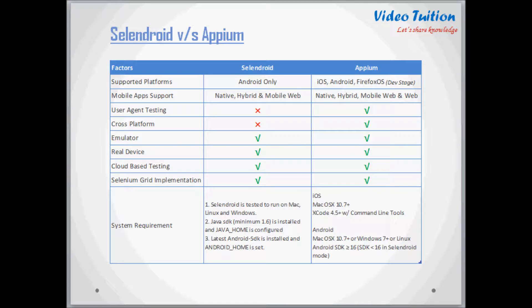Appium supports testing for native, hybrid, mobile web, and web applications for both Android and iOS. SelenDroid does not support cross-platform testing as it is based around Android. Appium provides testing for multiple platforms including a user-agent-based approach, which is not inherently supported in SelenDroid. Both SelenDroid and Appium can be used on emulators and real devices and can be integrated as a node into the Selenium grid for scaling and parallel testing. Cloud-based testing can also be performed using both framework arrangements.